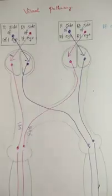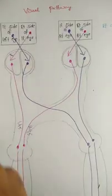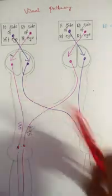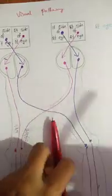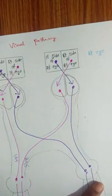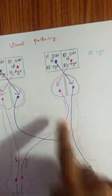Here is the visual pathway. Now, lesions of the visual pathway — here is the optic nerve, optic chiasma, and the optic tract. For optic nerve lesion, here is the lesion.